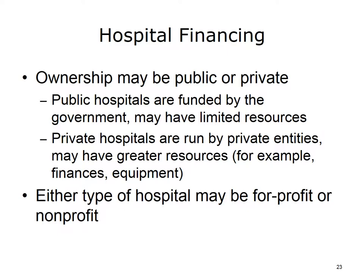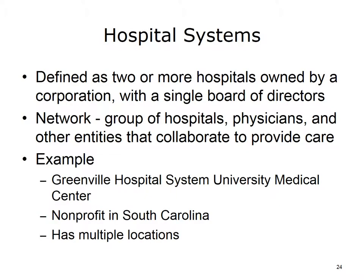Hospitals may be publicly or privately owned and funded, and they may be either for-profit or non-profit. A public hospital is funded by the government and therefore may have limited financial resources. A private hospital is owned by a private organization, such as a medical insurance company, and tends to have greater capital and more up-to-date equipment, so its services may be more expensive. A hospital system consists of two or more hospitals or other health care facilities that are owned, leased, or managed by an organization such as a corporation. Oversight is provided by a single board of directors. Health care networks are groups of hospitals, physicians, other health care providers, insurers, and agencies that collaborate to provide many types of health care in a community. One example is the Greenville Hospital System University Medical Center, a non-profit organization in South Carolina that includes five major medical centers and other facilities.